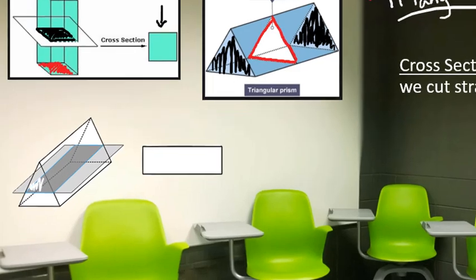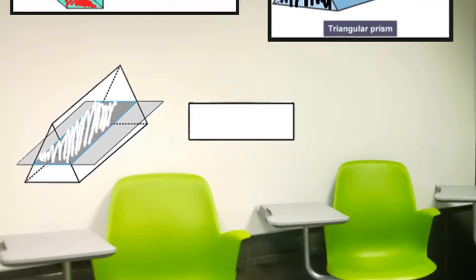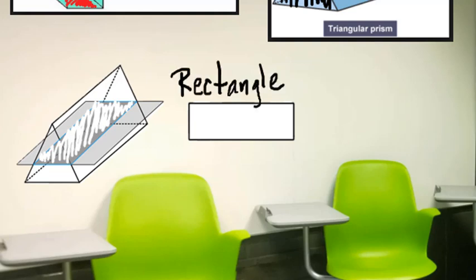And this is the part that would be cut out of it, so it has a rectangular cross section. So just because it's a triangular prism, that doesn't mean it's going to result in a triangular cross section. Just something to think about.